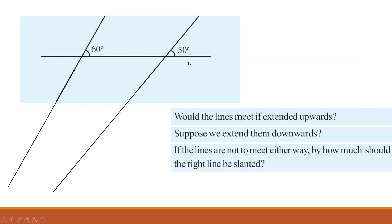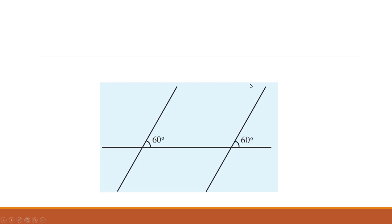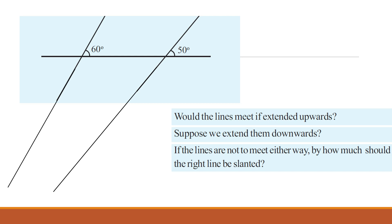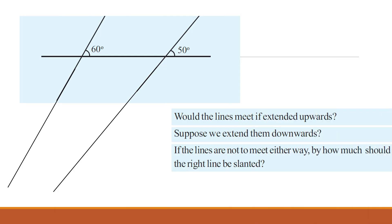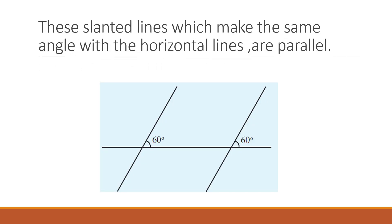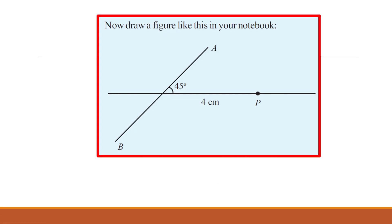Here we have 60 degrees, 90 degrees, and 60 degrees. That is why we have 60 degrees. We have 60 degrees and 60 degrees. These slanted lines which make the same angle with the horizontal lines are parallel. The same lines are parallel.